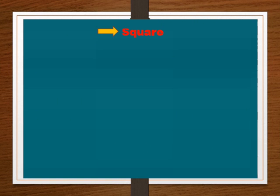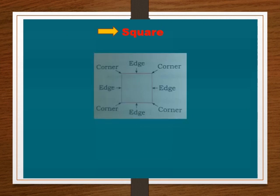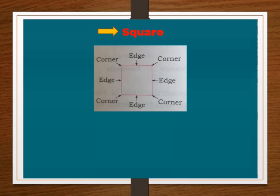Here we see a shape of square. Itte aaplala kaay disat ahi. How many edges does a square have?